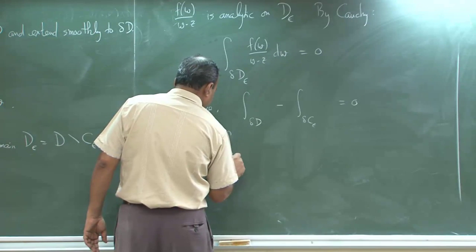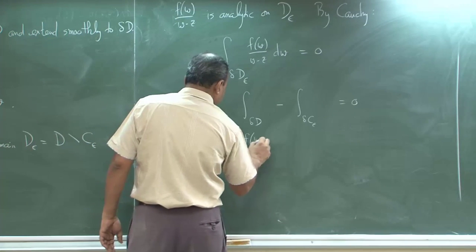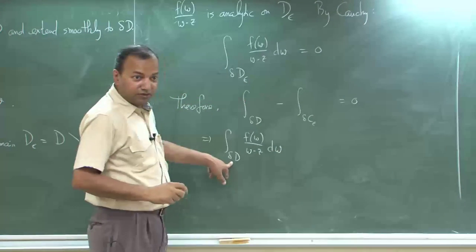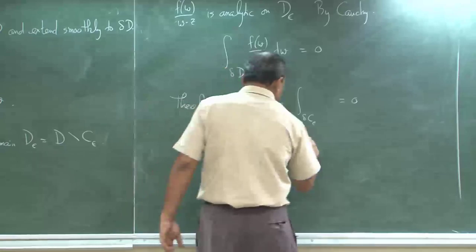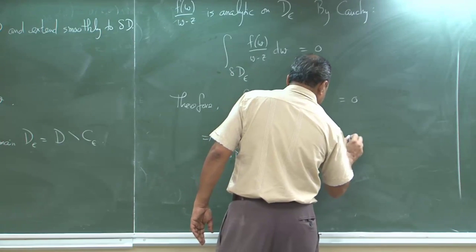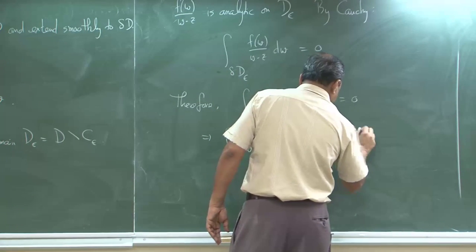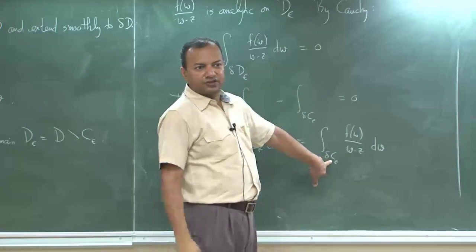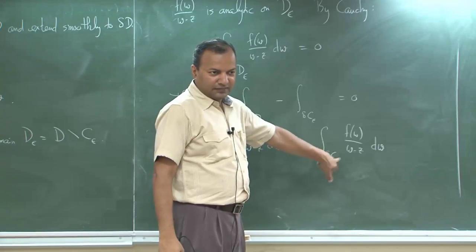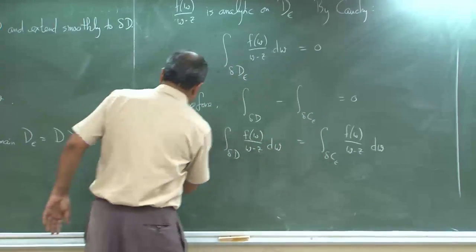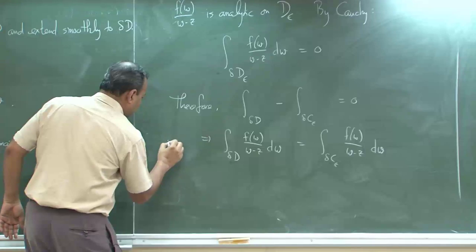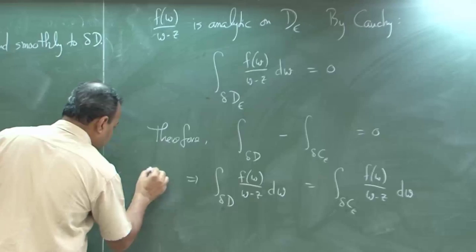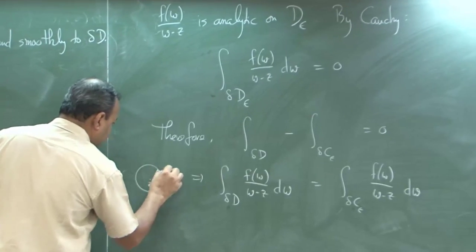I can split it like this because on all these boundaries the function is well defined and does not diverge — it only diverges at z. This implies that the integral of f(w)/(w − z) dw on the boundary of D equals the integral of f(w)/(w − z) dw on the boundary of the circle C_ε. C_ε is a circle centered at z with radius ε, traversed counterclockwise.